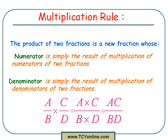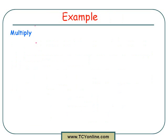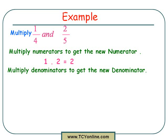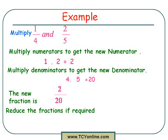Now let's learn this multiplication rule with the help of an example. We need to multiply 1 over 4 and 2 over 5. Simply multiply the numerators to get the new numerator — 1 times 2 gives 2, which is our new numerator. Now multiply the denominators to get the new denominator — 4 times 5 gives 20, which is our new denominator. So the new fraction is 2 over 20. We can reduce this by dividing both numerator and denominator by 2 to get 1 over 10. So 1 over 4 times 2 over 5 gives 2 over 20, which when reduced gives 1 over 10.